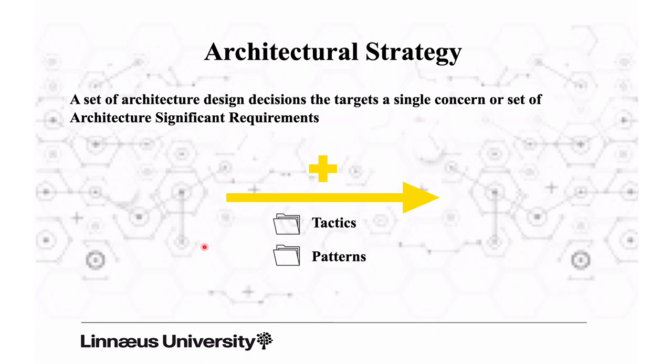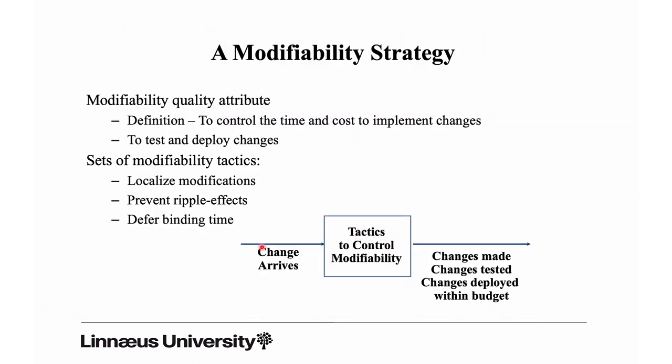The decisions you make with respect to a quality attribute form a strategy for that attribute. Your strategy contains the tactics and patterns that structure the architecture — just to illustrate what this can result in, we can look at a modifiability strategy.